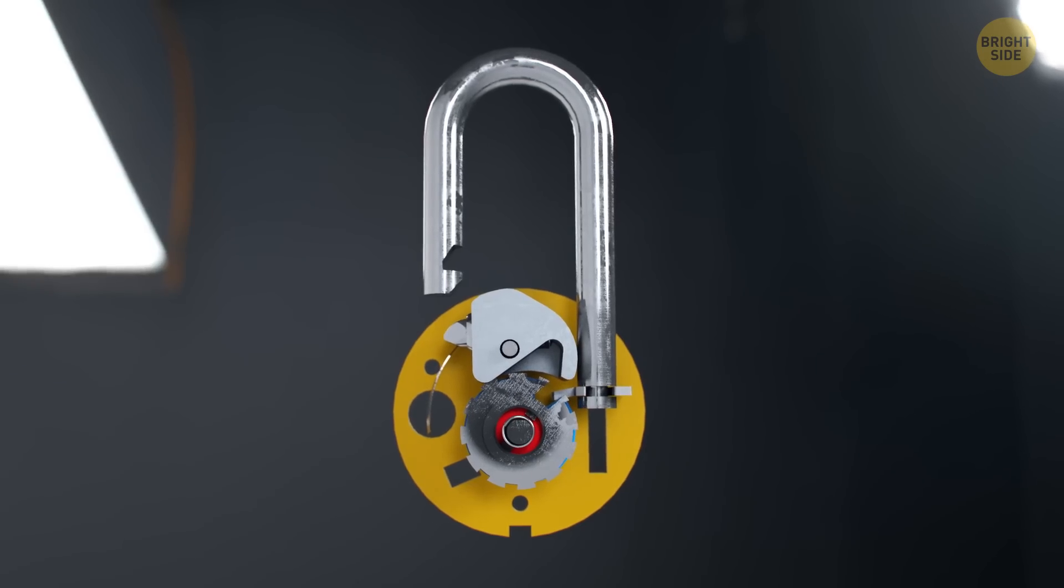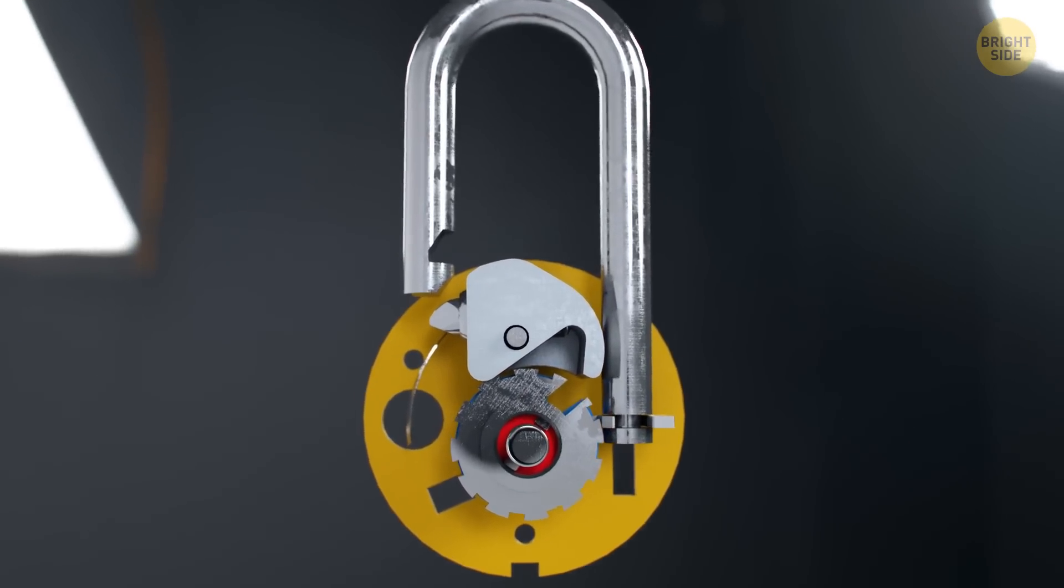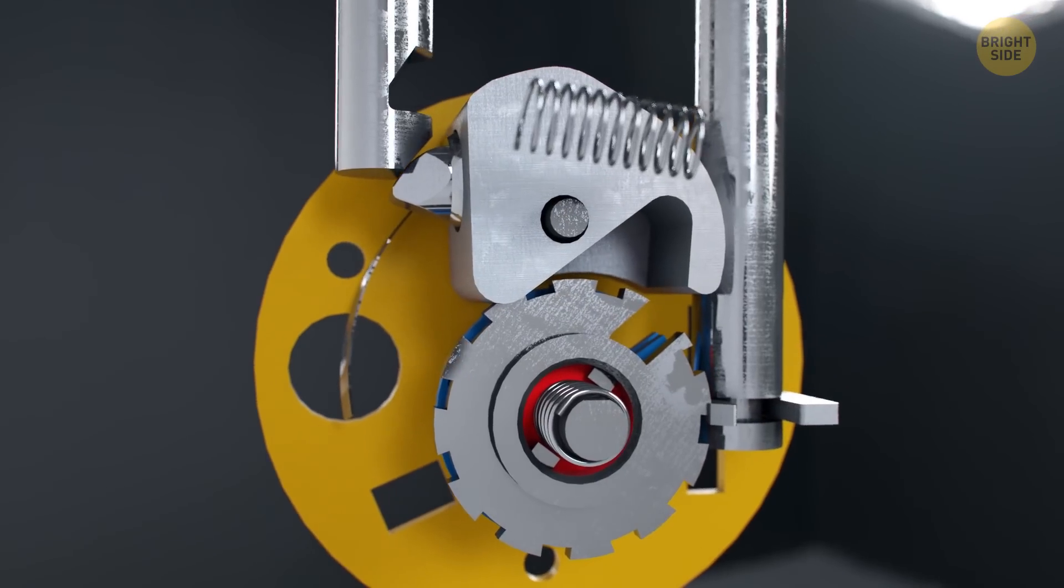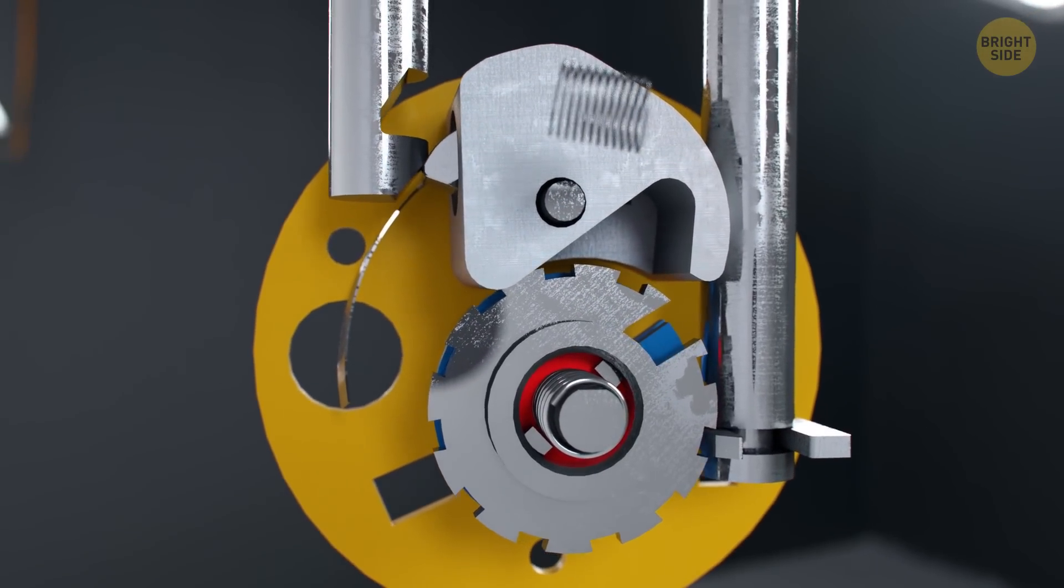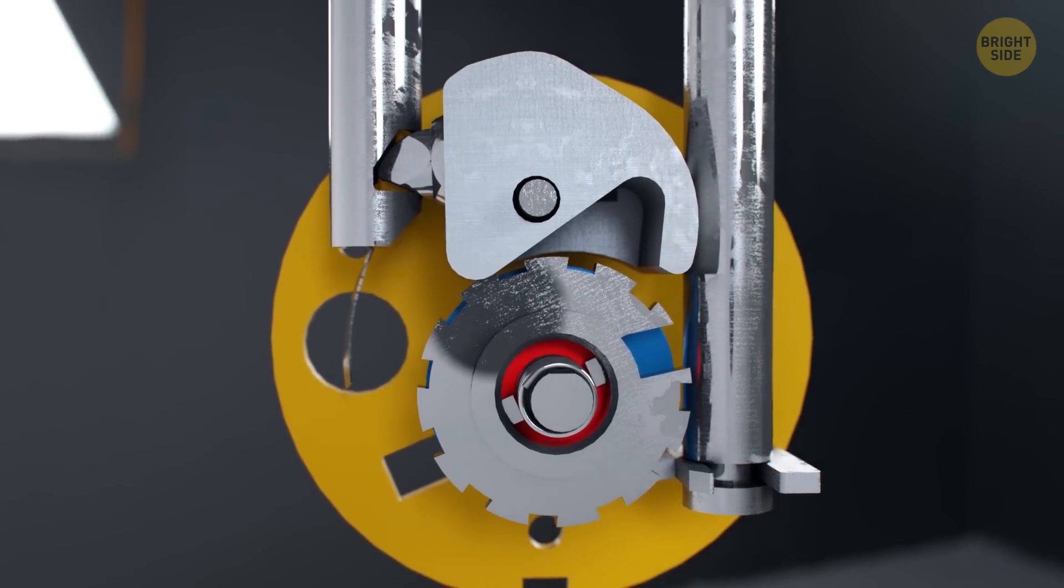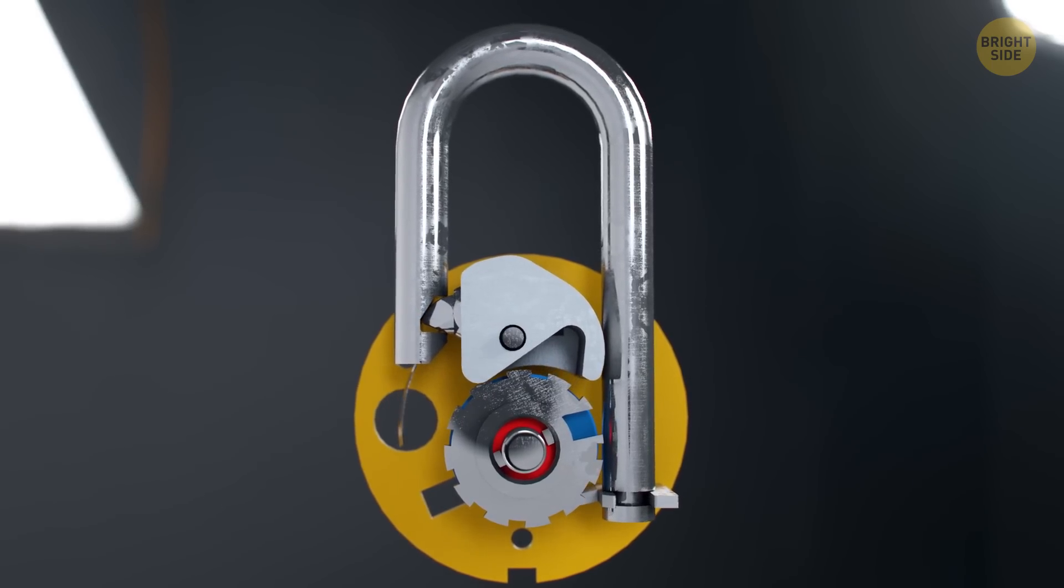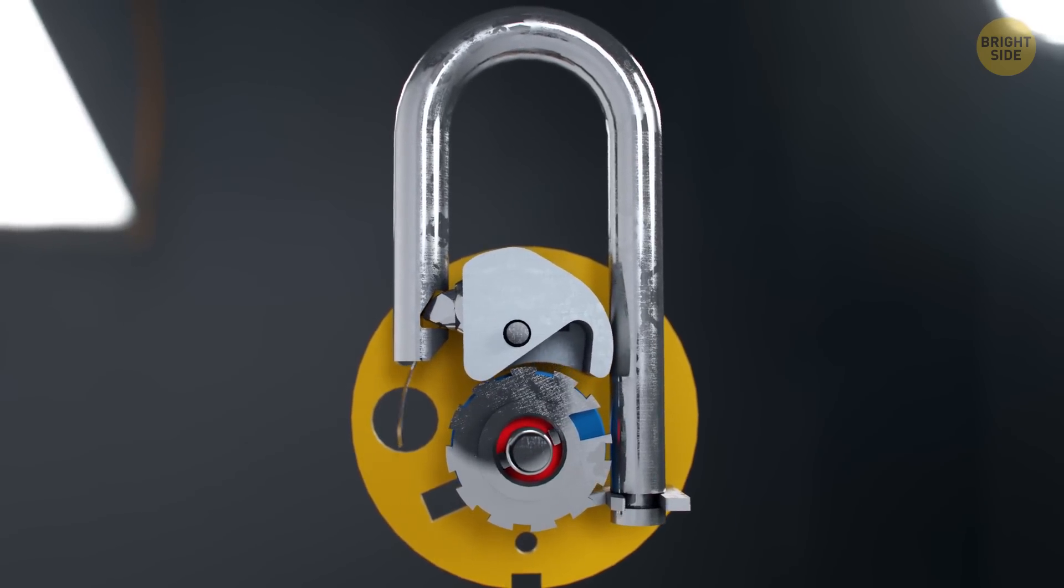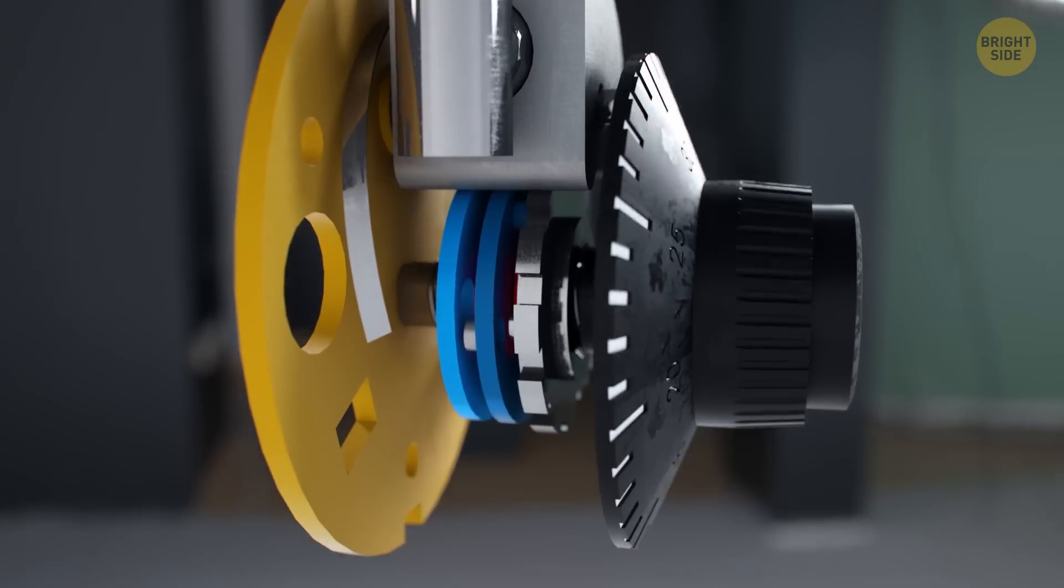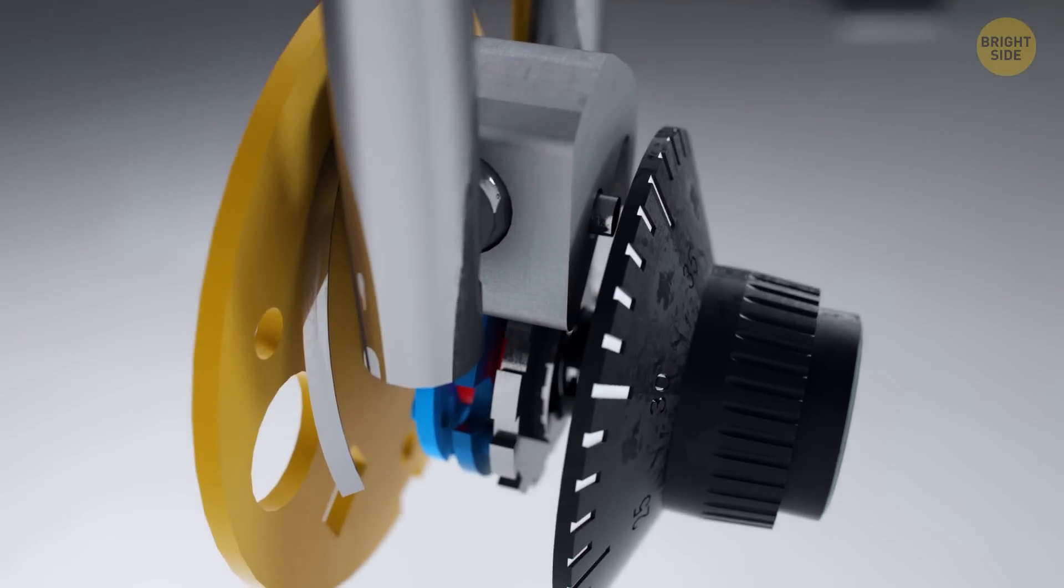To close the lock, you have to push the shackle back into the case. The shackle presses on the latch, compressing its spring. When the latch comes to the shackle slot, it causes a slight jolt inside the lock. It's enough to move the combination discs a little to the sides. Now they're not lined up in a row, and the lock can't be opened without re-entering the code. For even more safety, always turn the combination wheel several times so that the discs are in completely random positions.